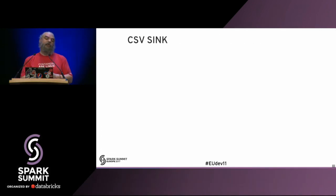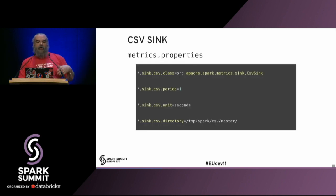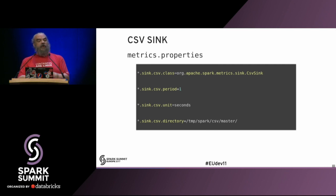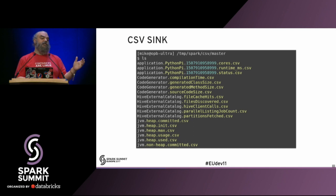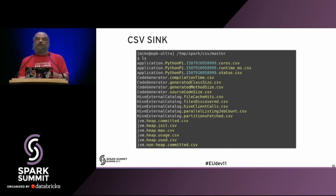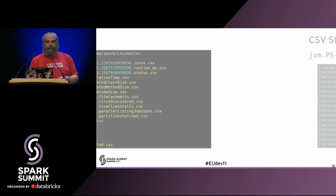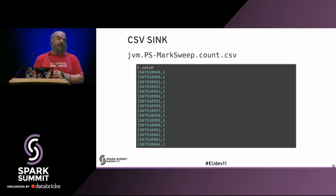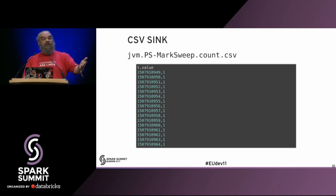There's also a comma-separated value sink. This is really interesting because you can produce a lot of data, store them in files, and then post-process them later very easily. Turning this on is similar to the other examples - you enable the sink class, tell it how frequently to run. In the case of the CSV sink, you can tell it where to place the files. You get a directory where, for each metric value type, you get a CSV file. You could even re-ingest these into another Spark application for processing. Internally, for our favorite metric the mark-sweep count, you see a time value on the left and the count on the right.